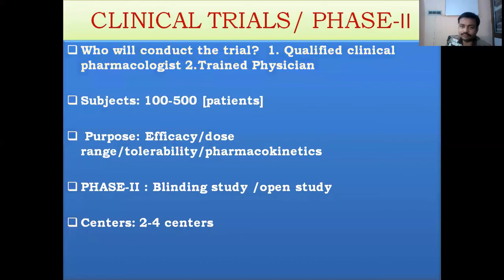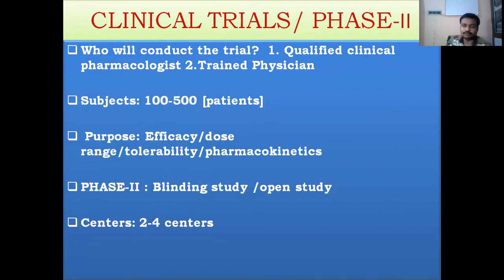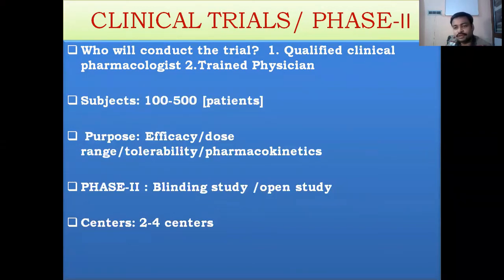In Phase 2, qualified clinical pharmacologists and trained physicians are again the only ones permitted to conduct the trial, with other supporting healthcare staff assisting but not in direct patient contact. The number of subjects in Phase 2 is at least 100 to 500 patients. The main purpose is to estimate efficacy, identify the dose range, assess tolerability, and estimate pharmacokinetic parameters of the formulations.